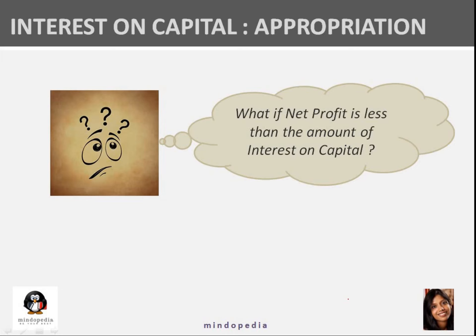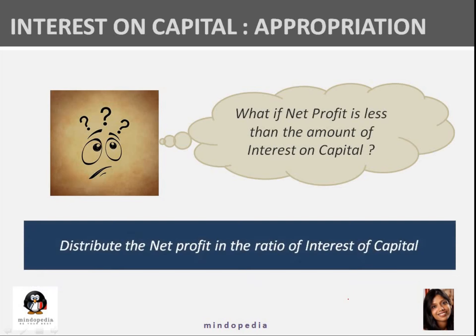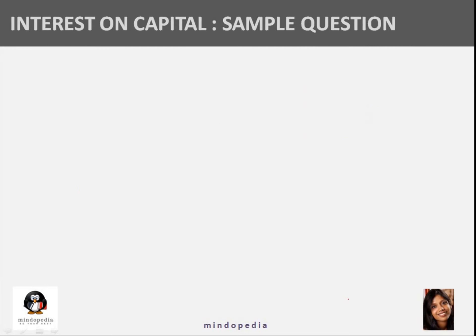A student asks: what if net profit is less than the amount of interest on capital? Great question — because no question is silly. If net profit is less than the amount of interest on capital, that is exactly the case we had marked to discuss in detail. Then we will have to distribute the net profit in the ratio of interest on capital.